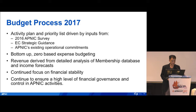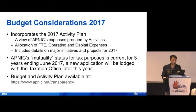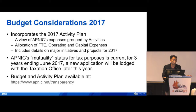That's a bottom-up zero-based expenditure and expense budgeting approach. Budget consideration in 2017 incorporates the 2017 activity plan grouped by activity, including detailed major initiatives and projects. APNIC's mutuality status for tax purposes is currently for three years, ending at the end of 2017. A new application will be launched with the taxation office to extend another three years, and hopefully as long as possible.